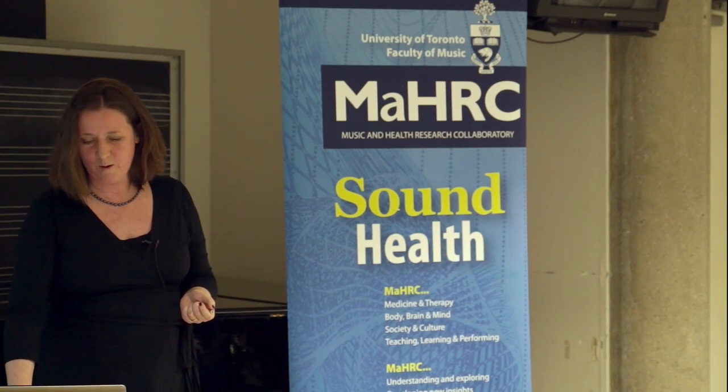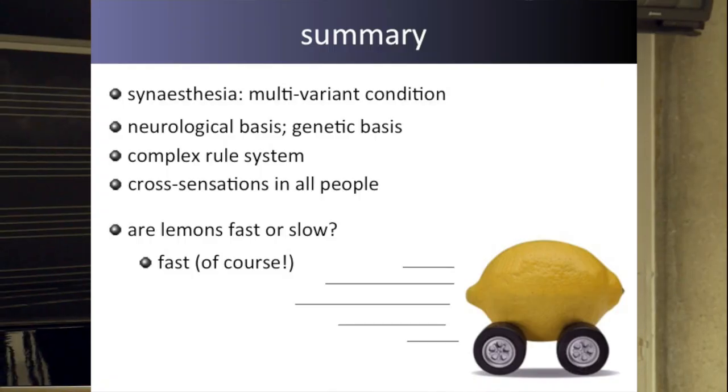To summarise: I've described synesthesia as a multivariant condition — not just one condition. It has a neurological basis, a genetic basis, and quite a complex rule system when you look at it in detail; it's not random at all. And really, there are these cross-sensory associations in all people that can mirror what synesthetes are experiencing. I wanted to end with a question posed to me by Peter Walker at Lancaster University: he asked whether lemons were fast or slow. Fast. I'm not entirely sure why, but it's fast. Thank you very much.